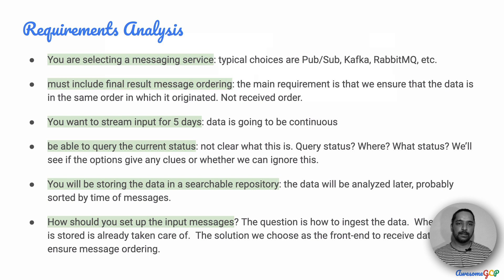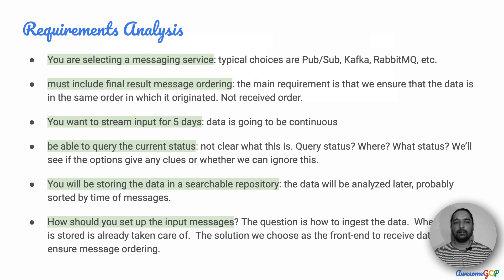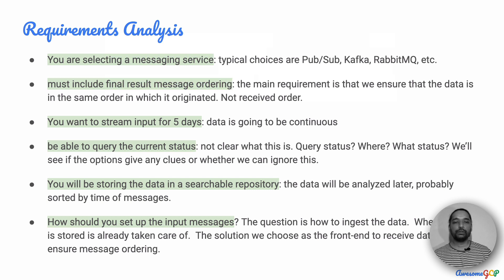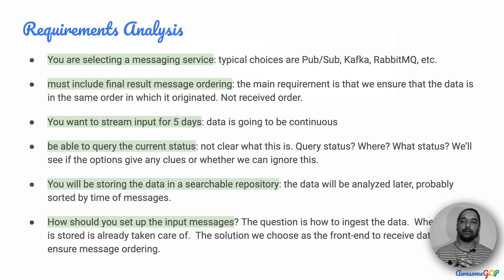One of the requirements says that we have to be able to query the current status. For me this was not very clear — what status are we querying, where are we querying it? We will see if the options give any clues or whether we can just ignore this part. You will be storing the data in a searchable repository, so the data is going to be analyzed later, probably sorted by time of messages. The question is how do we ingest the data that is coming in?